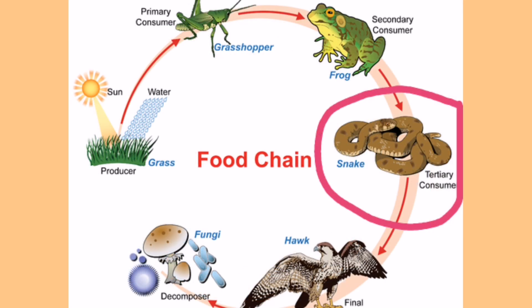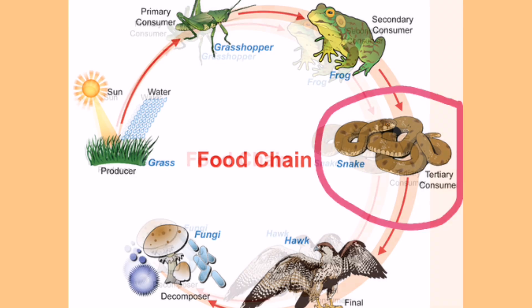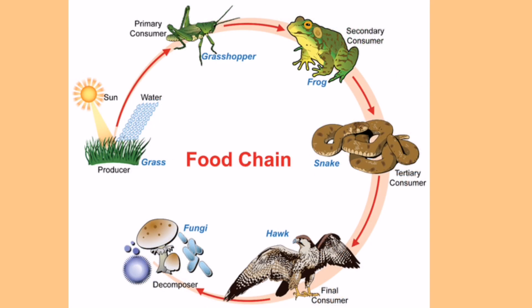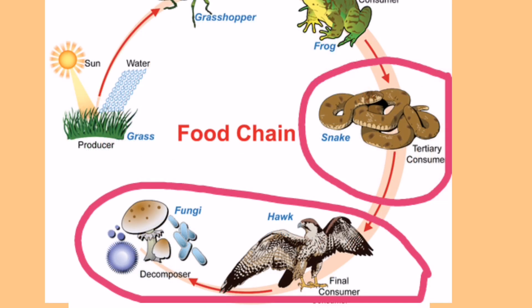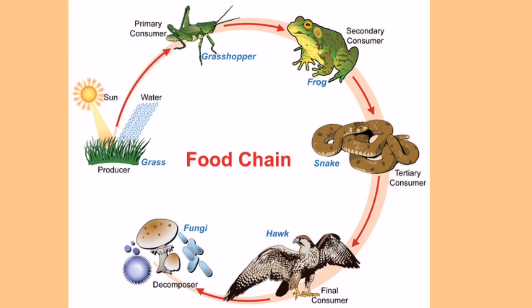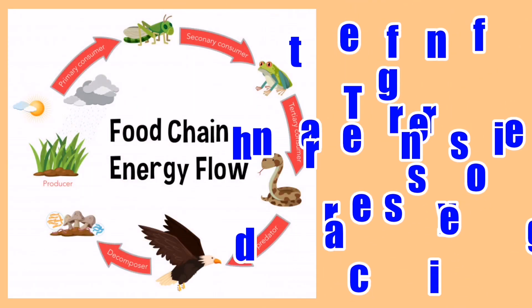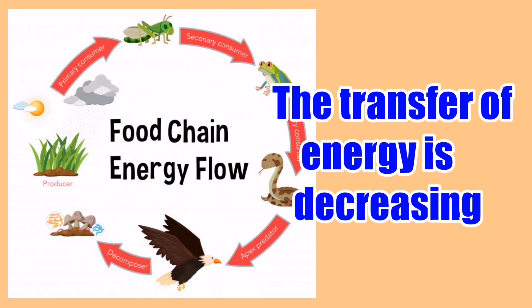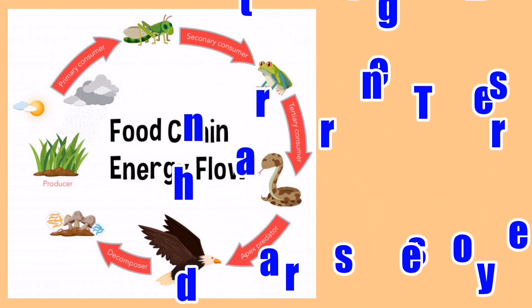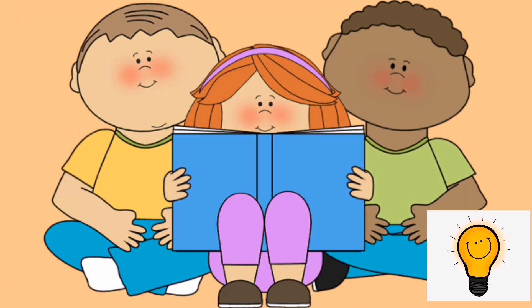The third eater, called the tertiary consumer, eats the secondary consumer, and so on. The final eaters — the decomposers — break down the dead body of the last consumer to return nutrients to the soil, and plants may absorb those nutrients again to use in photosynthesis. The food chain shows that the transfer of energy from one organism to another is decreasing.